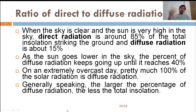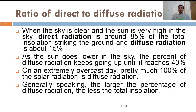Generally speaking, the larger the percentage of diffuse radiation — on a cloudy day, morning, or evening — the lower the intensity of solar radiation in watts per meter square received on a particular surface. On a graph with the y-axis showing global or diffuse radiation flux and x-axis showing time from 6 AM to 6 PM, the lower flat curve is the diffuse flux and the upper curve is the global flux. The difference between these two curves represents the direct radiation flux.